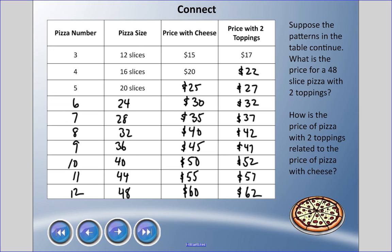What is the price for a 48-slice pizza with two toppings? The answer is 62 dollars. Now I asked you, how is the price of pizza with the two toppings related to the cheese one? Do you notice anything that's happening as we go down? It seems that it adds two dollars for the price of toppings. So you might say two toppings cost two extra dollars than the cheese. We could have figured out the answer just by looking at this, finding this, and then adding that two dollars.